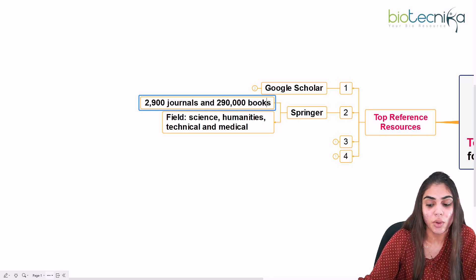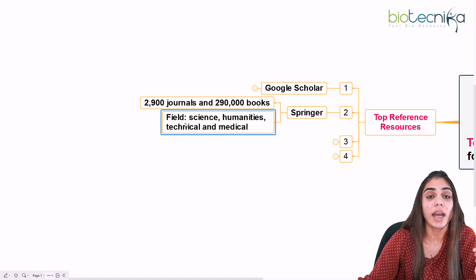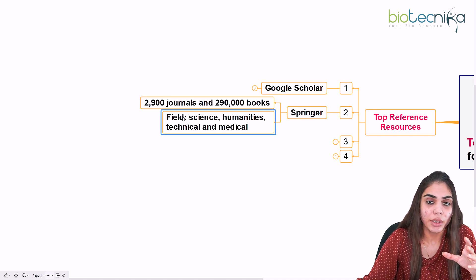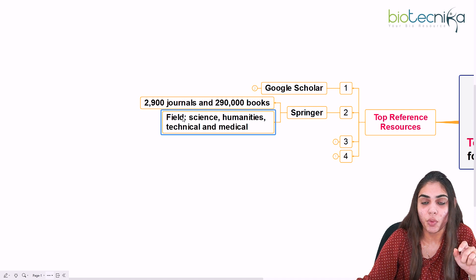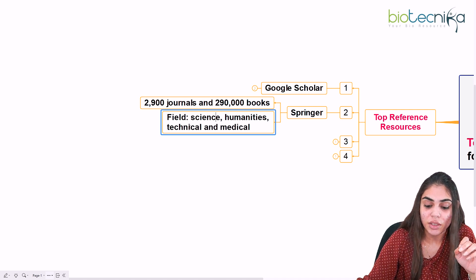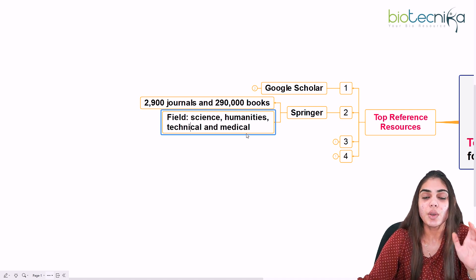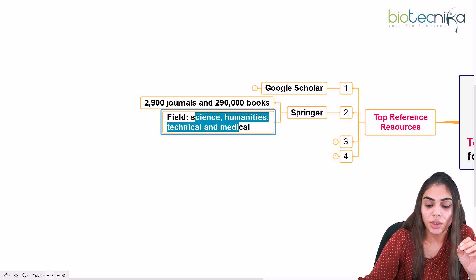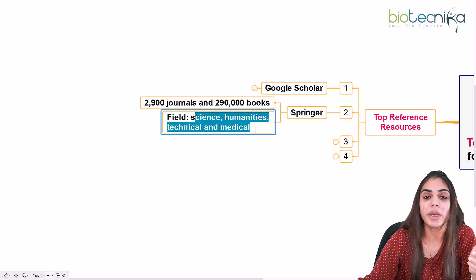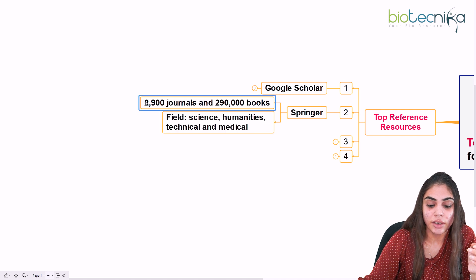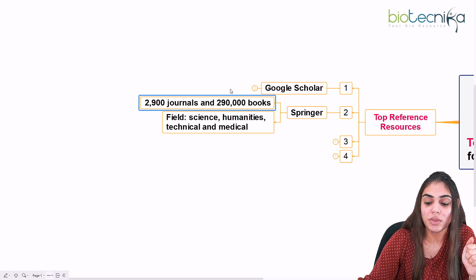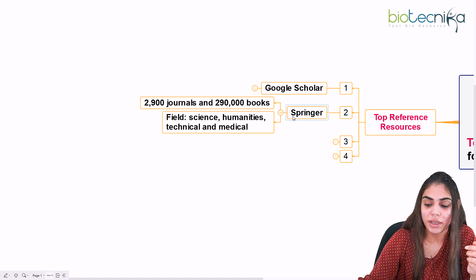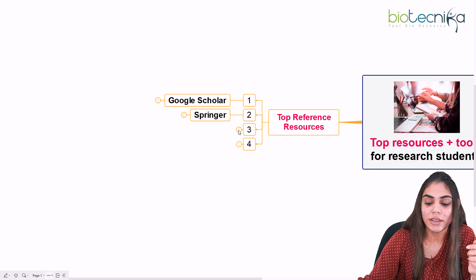The second reference resource is Springer. Springer has nearly 2,900 journals and 290,000 books, so you can imagine how much help it offers. All the text and material available covers the fields of science, humanities, technical, and medical. If you are searching for literature in any of these fields, you will easily find it through Springer.